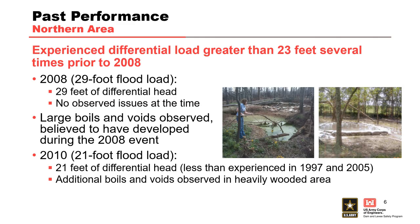As stated in the first case history presentation, Buck Chute is considered one of the weakest areas along the MR&T due to poor performance during previous flood events. Two potential backward erosion piping locations were examined in the first presentation: the northern area and the southern area. A more in-depth discussion of past performance issues in these areas is needed to provide context into the thought processes that led to the 2011 flood-fighting efforts.